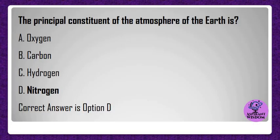The principal constituent of the atmosphere of the earth is? A) Oxygen, B) Carbon, C) Hydrogen, D) Nitrogen. Correct answer is option D.